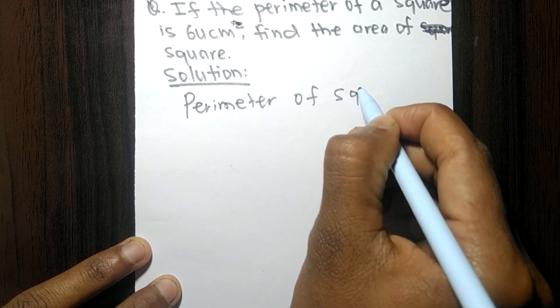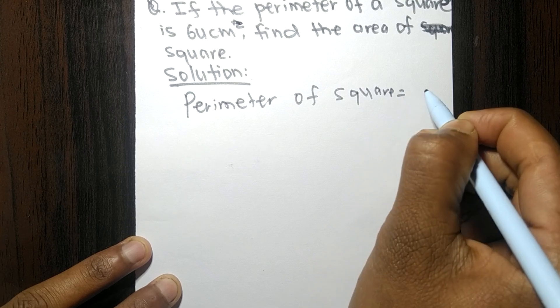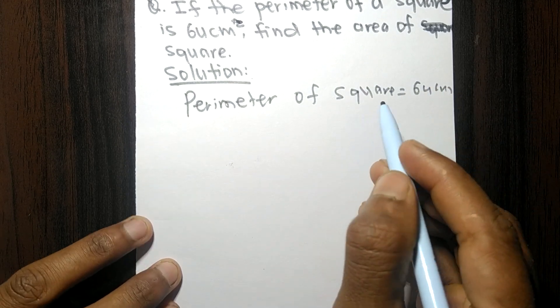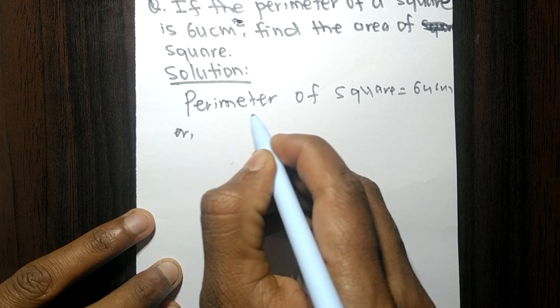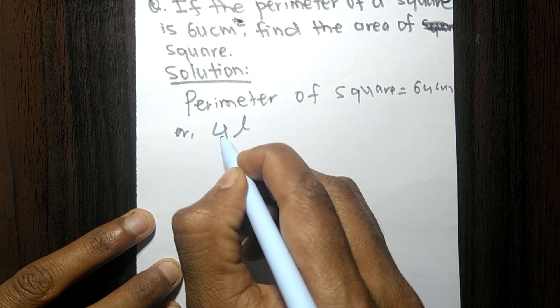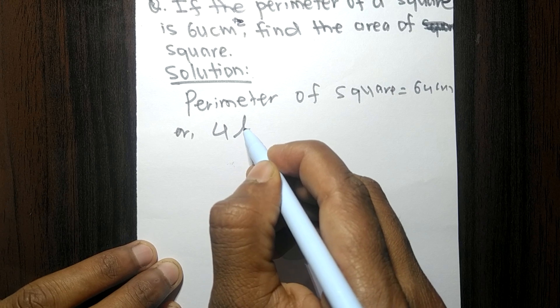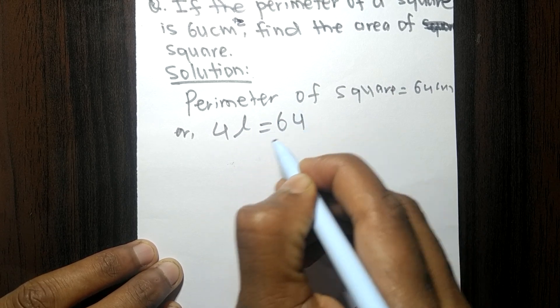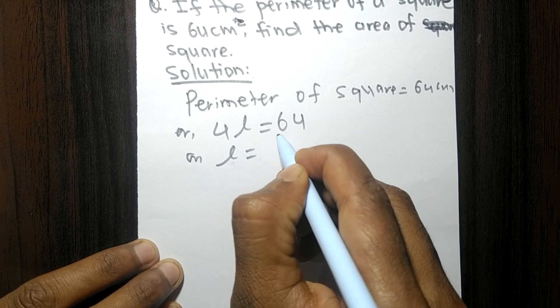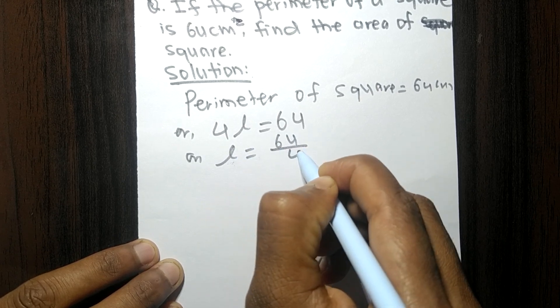The perimeter of the square we have given is 64 centimeters. So perimeter of a square, its formula is 4l, means 4 times length of the square equals 64. So l is equal to 64 divided by 4.